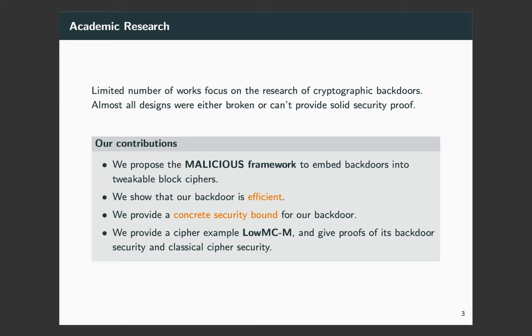Firstly, we propose a malicious framework to embed backdoors into tweakable block ciphers. Then, we show that our backdoor is efficient, which means that if you know the backdoor, you can easily recover the secret key used in any communications. We also provide a concrete security bound for our backdoor, so that it is difficult for any adversary to recover the backdoor. Lastly, we provide a cipher example called LUMCM based on this framework and give security proof of this cipher.